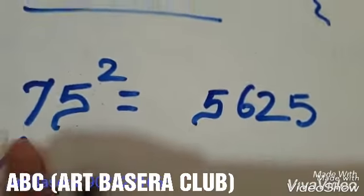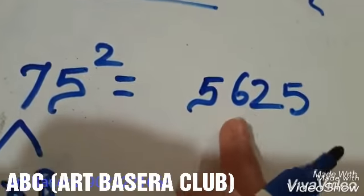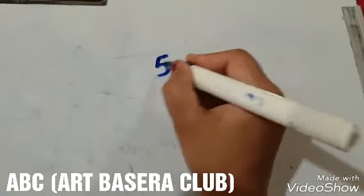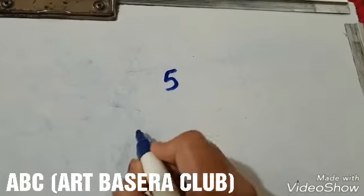We know how to find the square of a number ending with 5. Let's take another example.